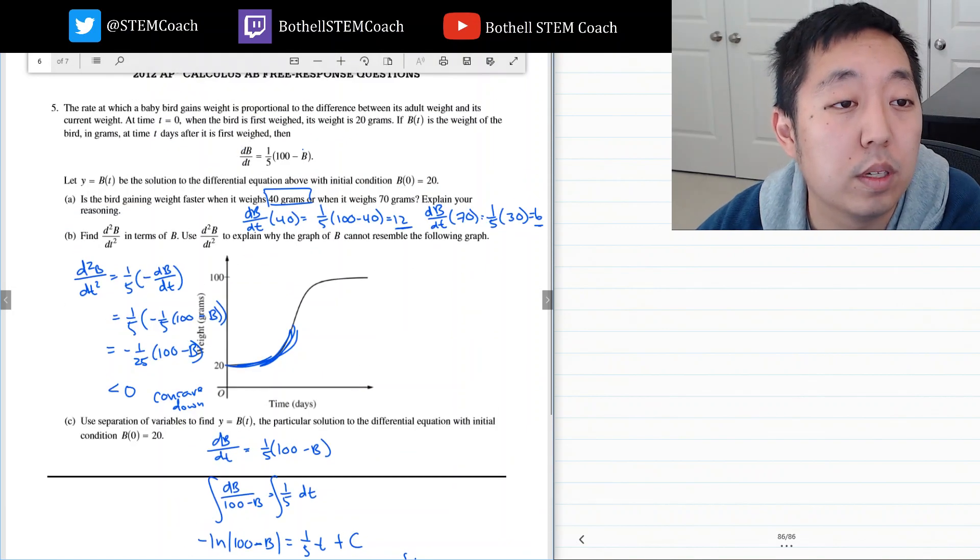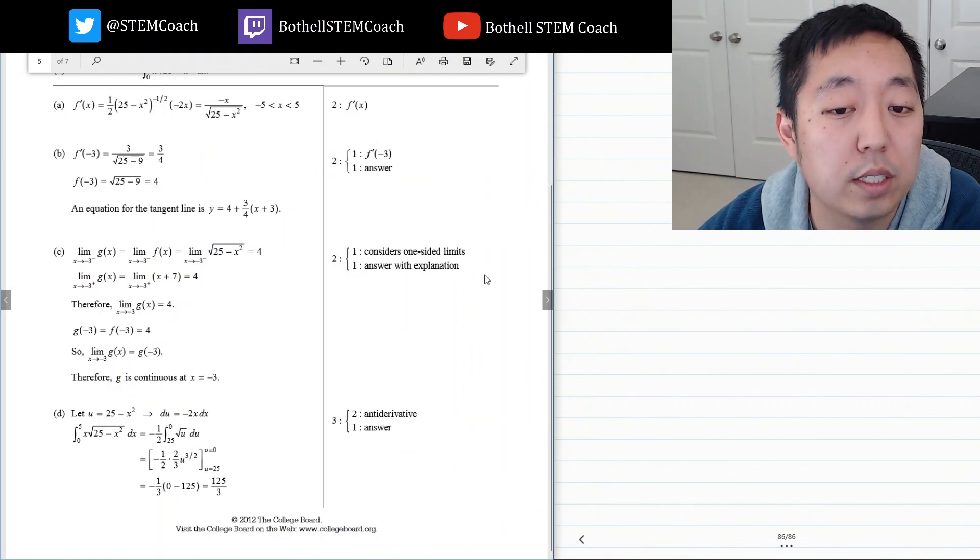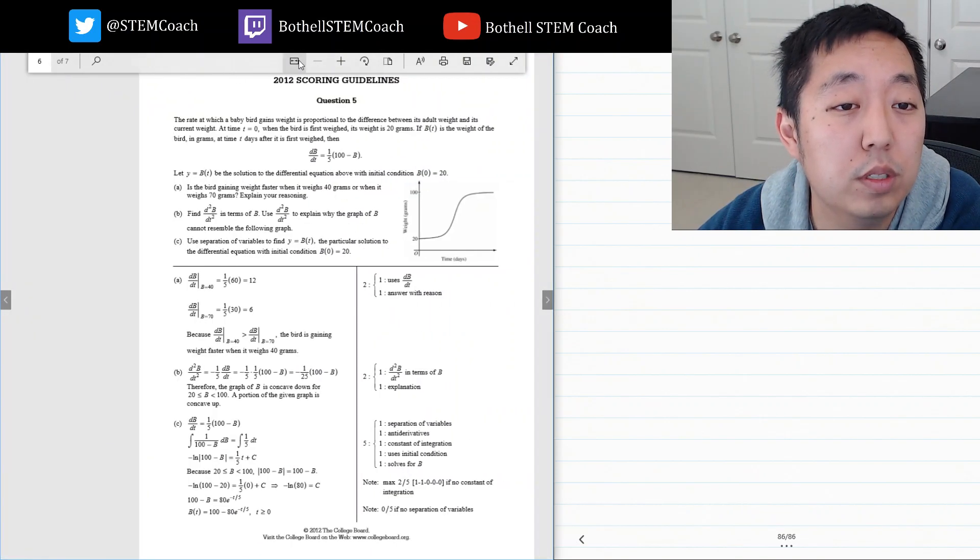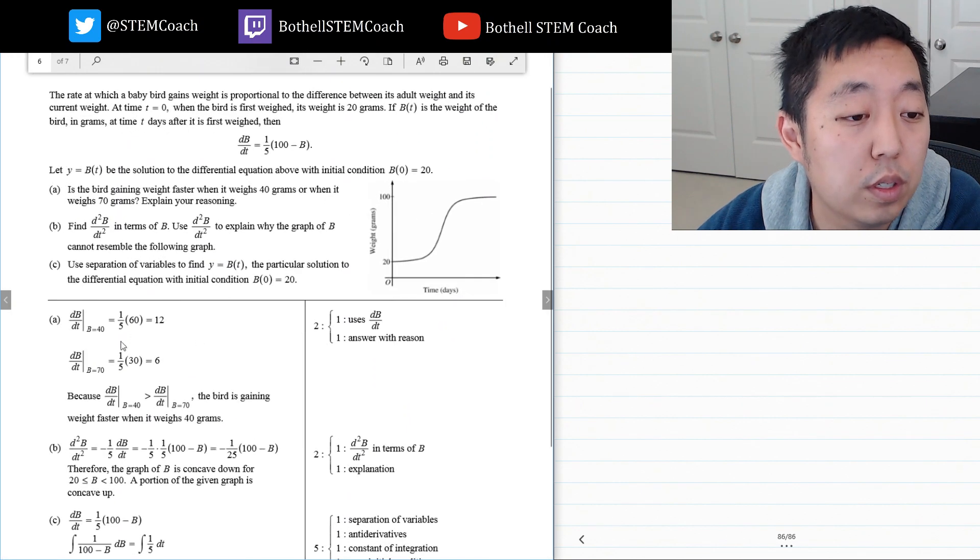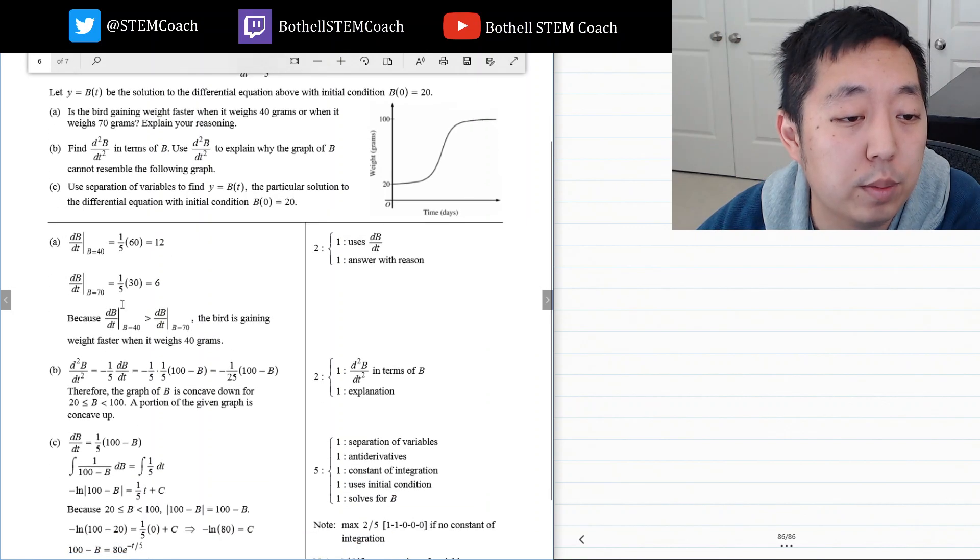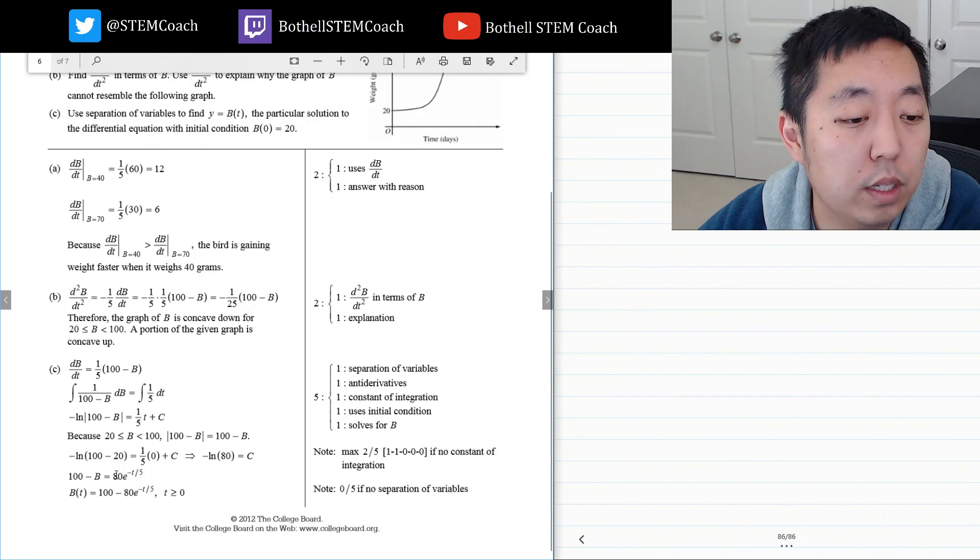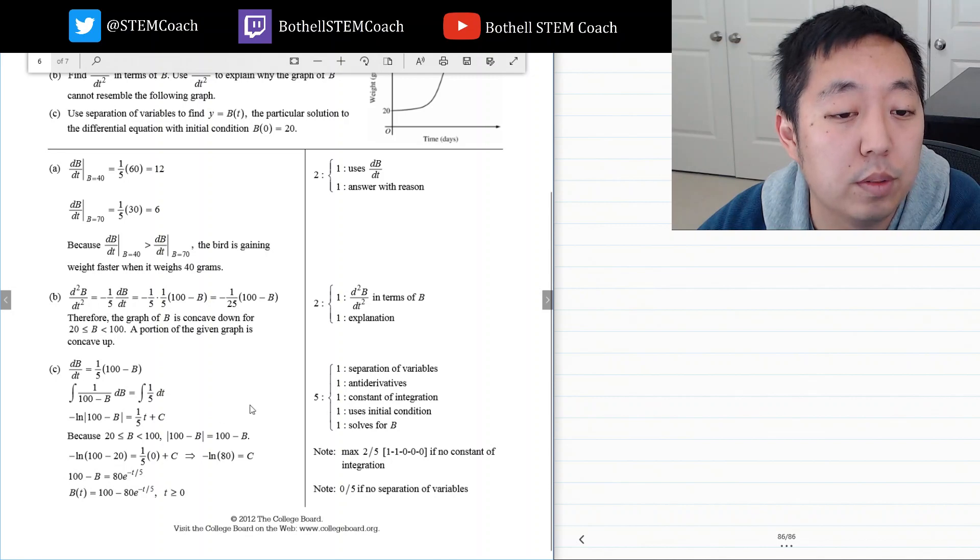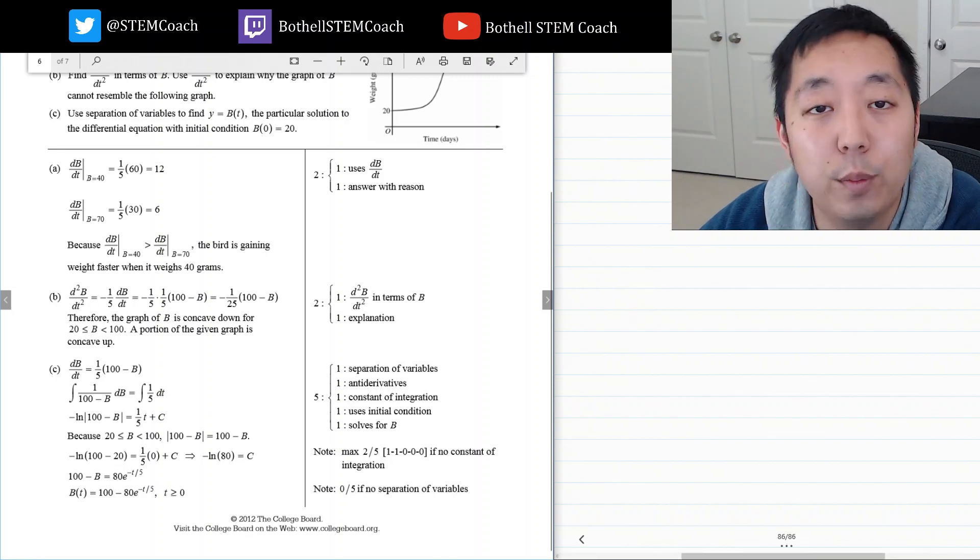Okay, and that's that. So let's look at the next question. Solutions 12 and 6, gaining weight faster when it was 40 grams because the derivative is bigger. That's what we said. Therefore the graph of b is concave down. A portion of the graph is concave up, so that's the explanation. And 100 minus 80 e to the minus t over 5, the same as 150. So all right, we nailed that one.